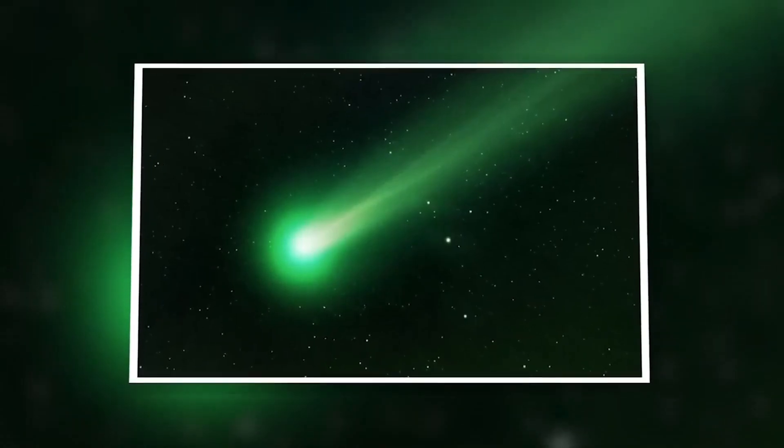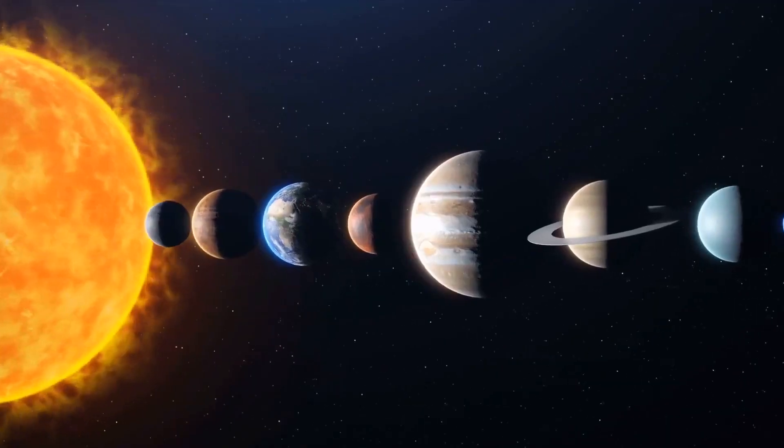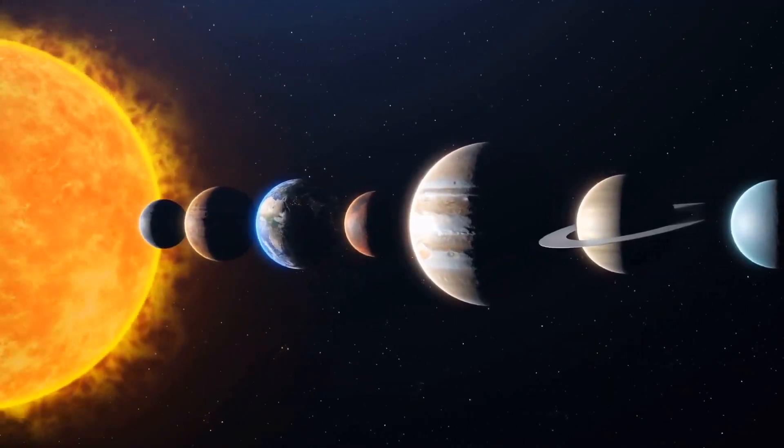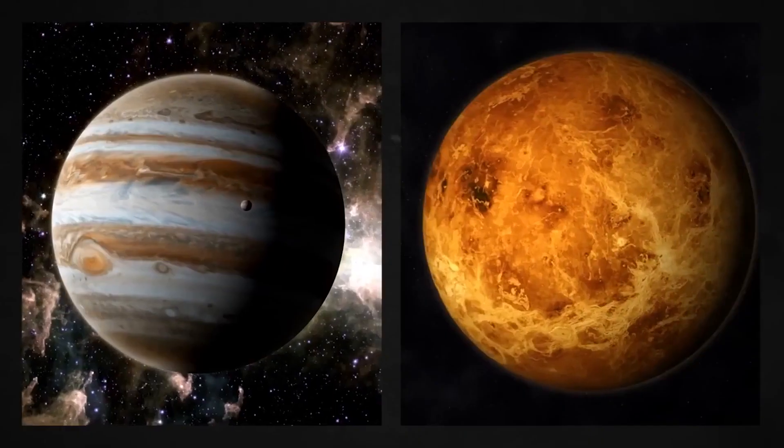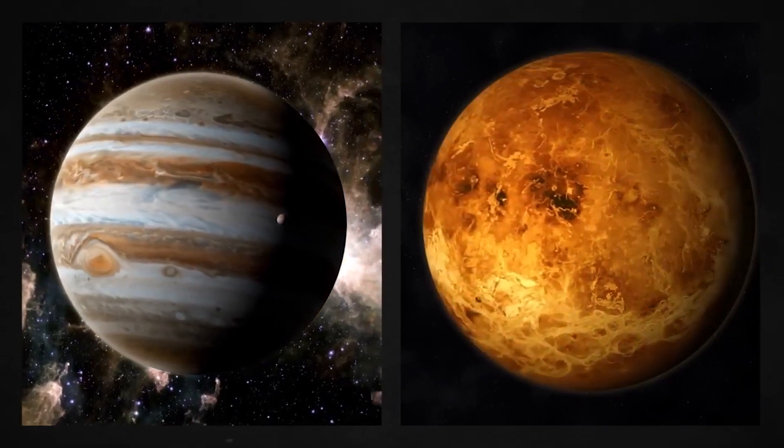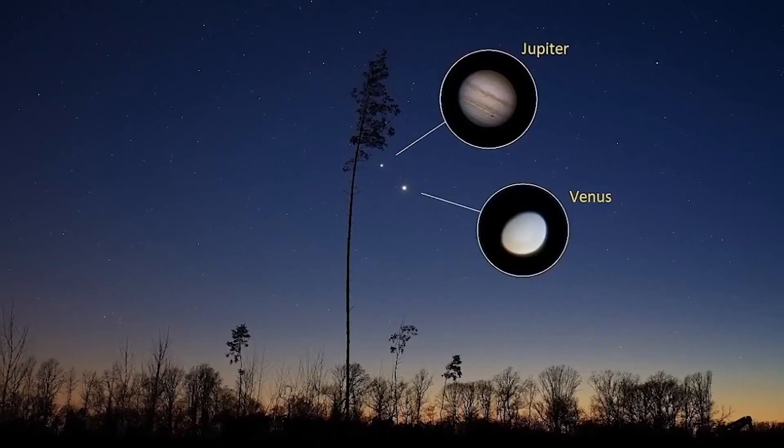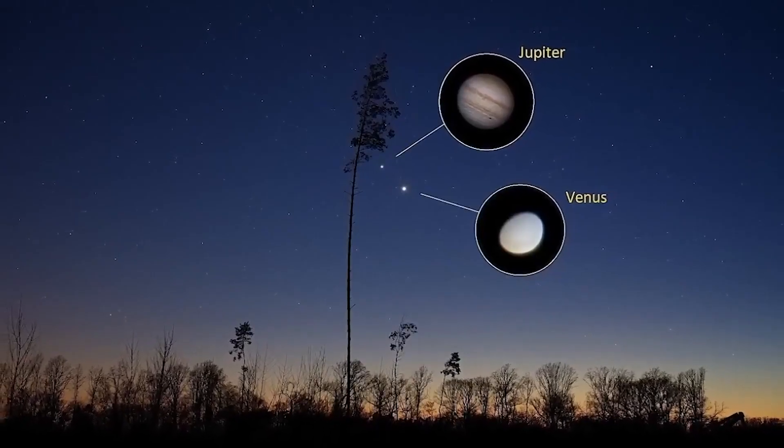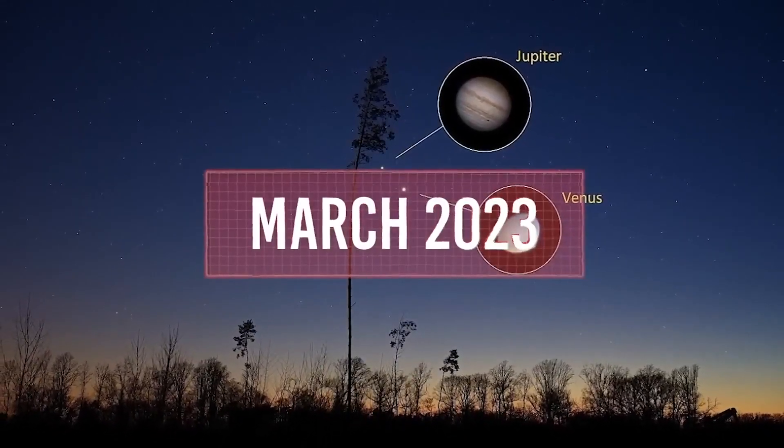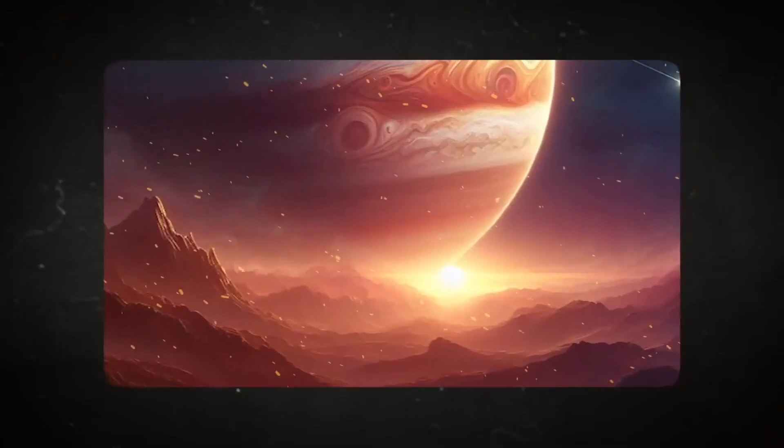In addition to the Green Comet, 2023 has offered us another celestial spectacle: a conjunction between Jupiter and Venus. These two brilliant planets have been gracing our evening sky, steadily approaching each other. In March 2023, they treated us to a captivating conjunction, one of the most extraordinary planetary events visible to the naked eye.